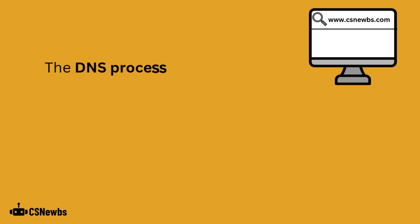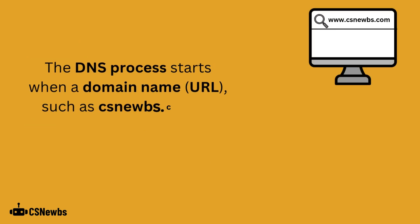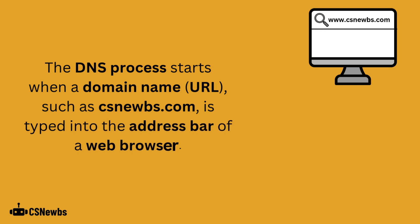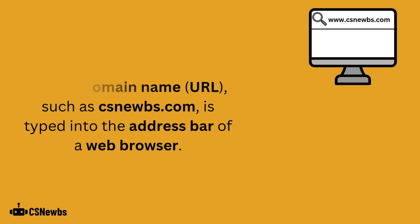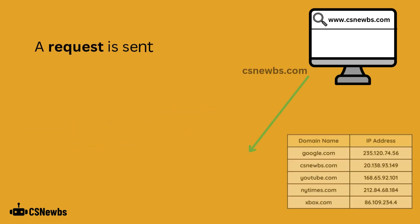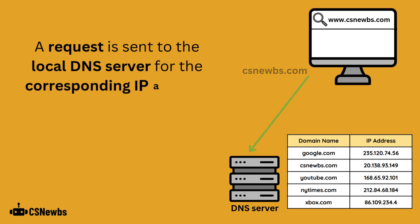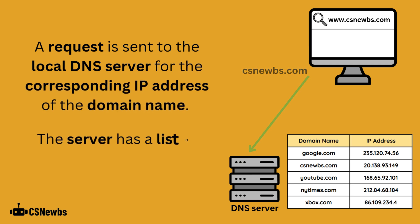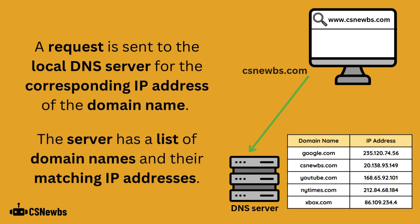The DNS process starts when a domain name, or URL, such as csnoobs.com, is typed into the address bar of a web browser. A request is sent to the local DNS server for the corresponding IP address of the domain name. The server has a list of domain names and their matching IP addresses.